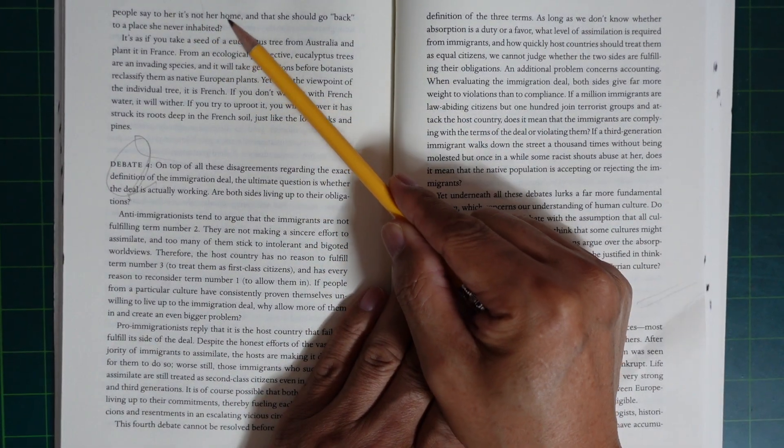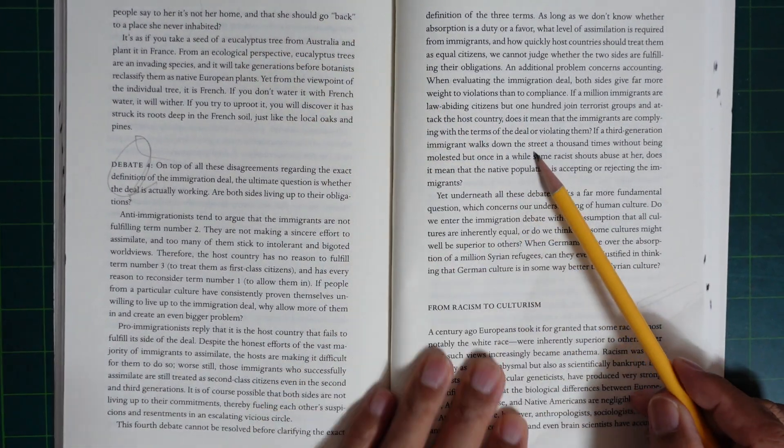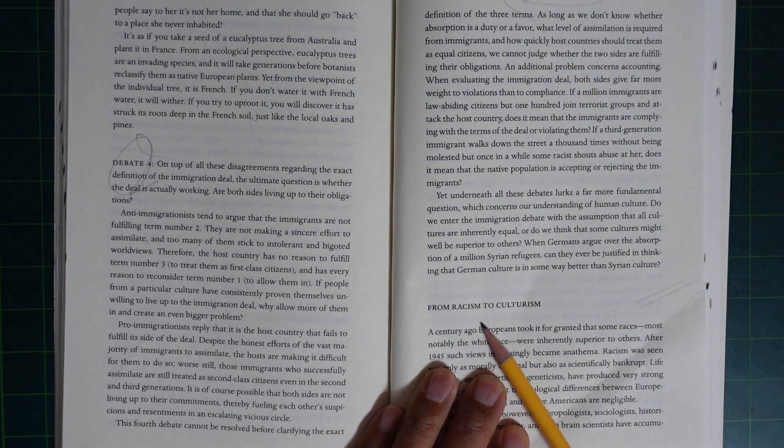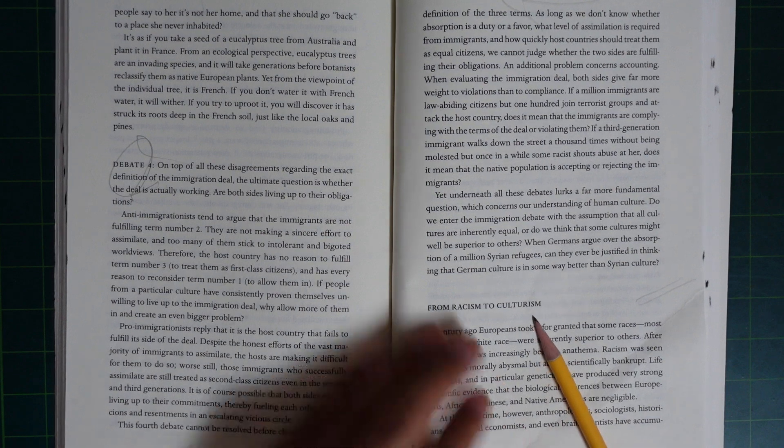21 Lessons for the 21st Century: Immigration from Racism to Culturalism